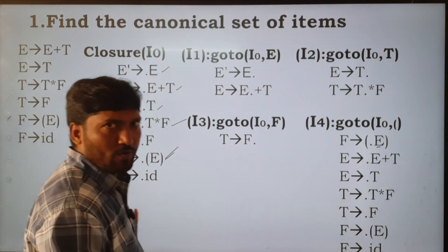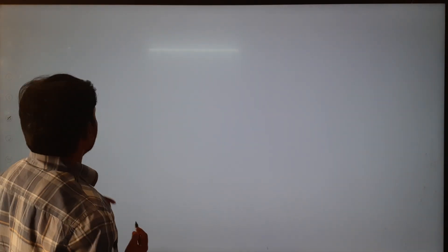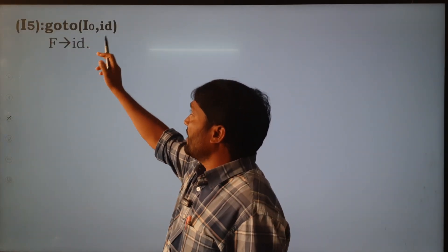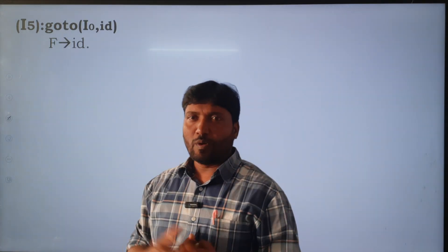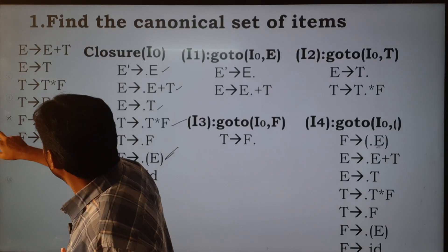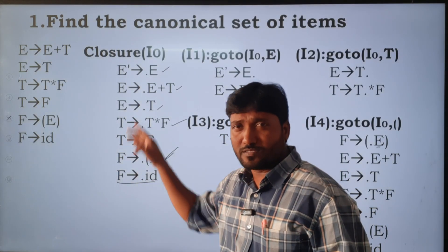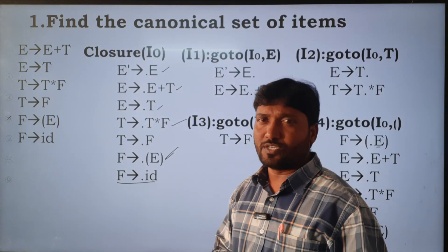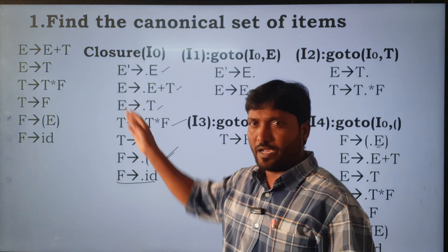Open bracket is over in closure of I0. Next we apply the goto function for id. So closure of I0 is complete. That means we have applied goto for all symbols after the dot — whether terminal or non-terminal. The dot symbol is moved one position to the right for each production in I0.